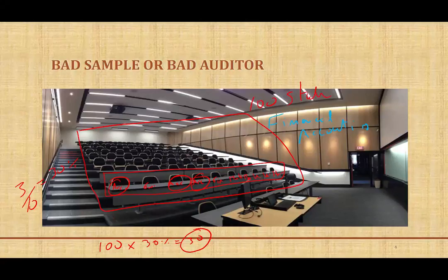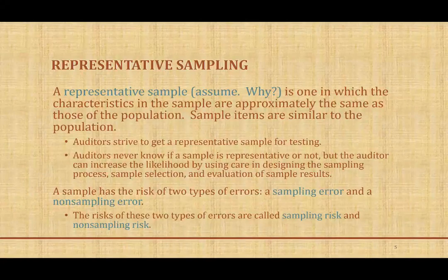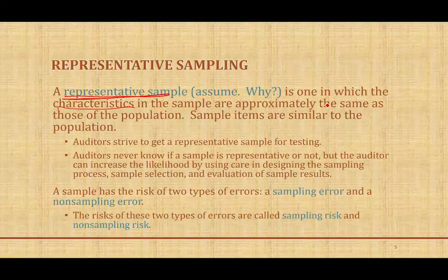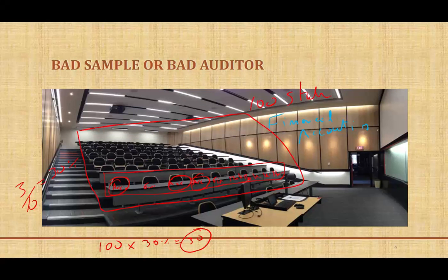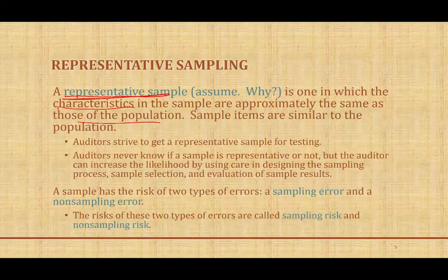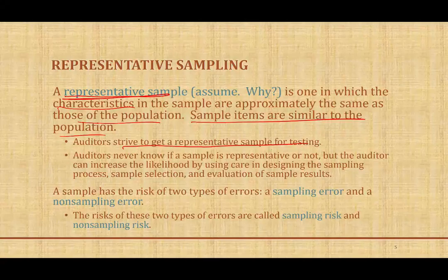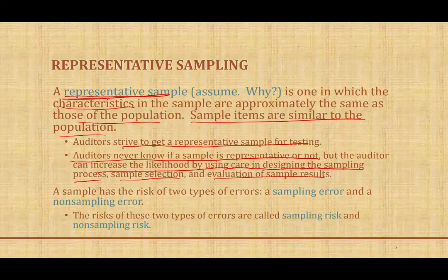This is an example where you sample and the process is good, but the sample is not representative of the population. We want to make sure our sample is a representative sample. A representative sample is one where the characteristics — basically the average and the mean — are approximately the same as the whole population. The auditor never knows for certain if the sample is representative, but can increase the likelihood by using care in designing the sampling process, the sample selection, and evaluation of the sample results.